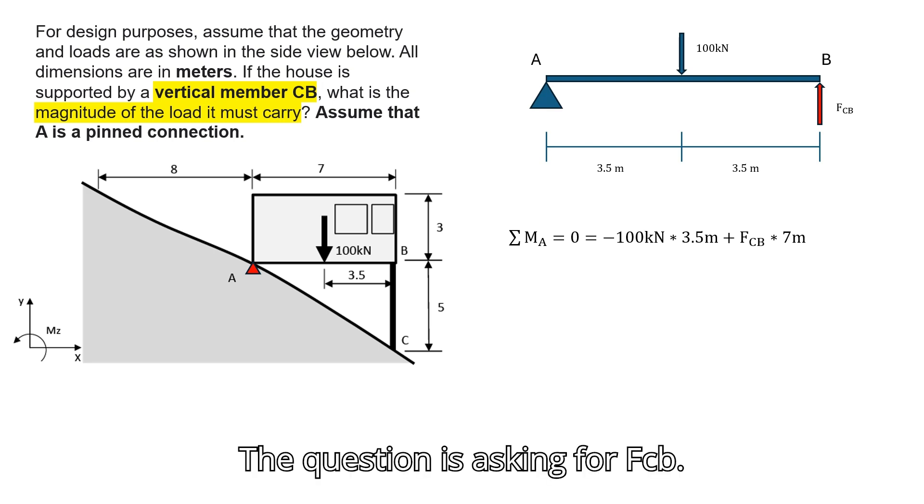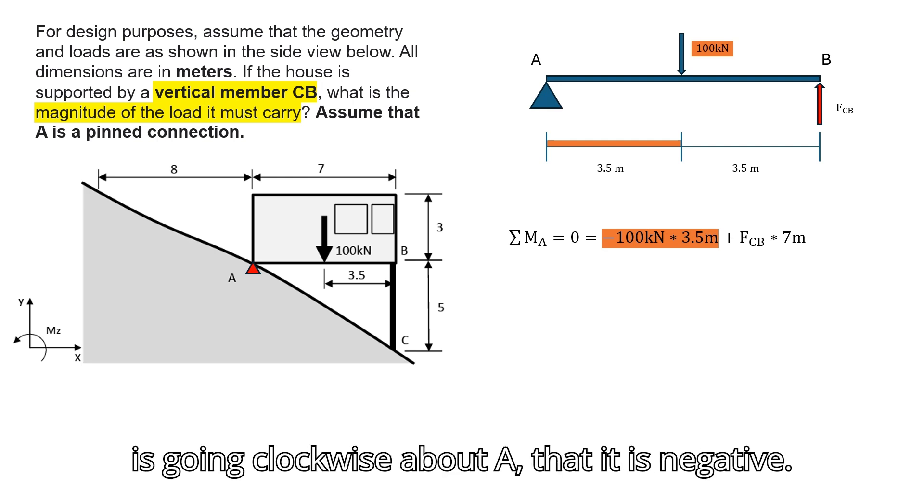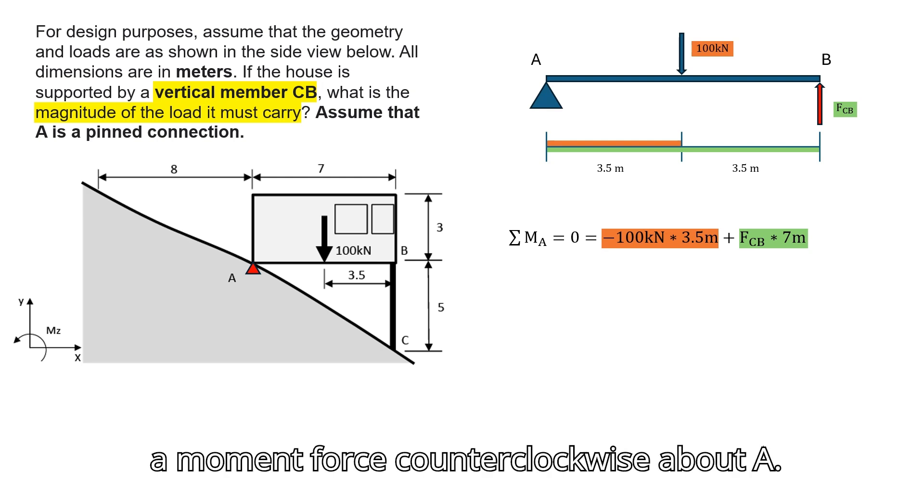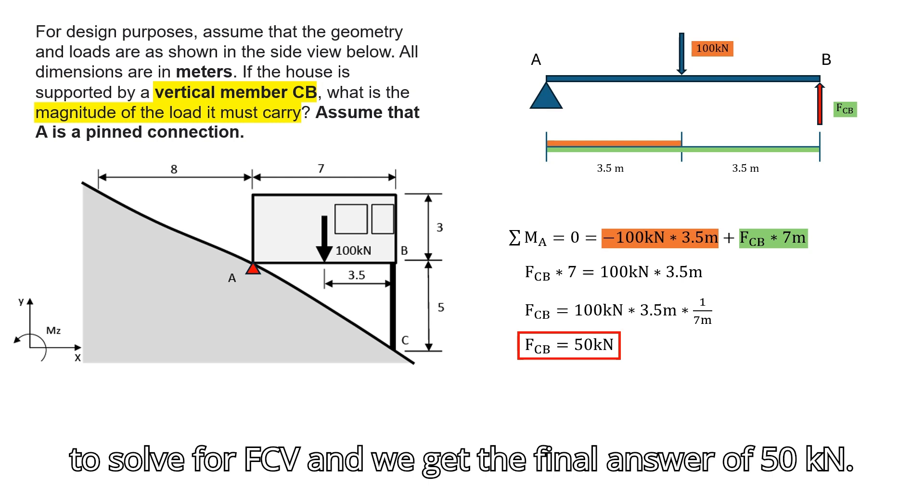The question is asking for FCB. So we find the sum of moments: 100 kN times 3.5 meters. Because the force is going clockwise about A, it is negative. FCB times 7 meters is positive because it will apply a moment force counterclockwise about A. We rearrange the equation of equilibrium to solve for FCB and get the final answer of 50 kN.